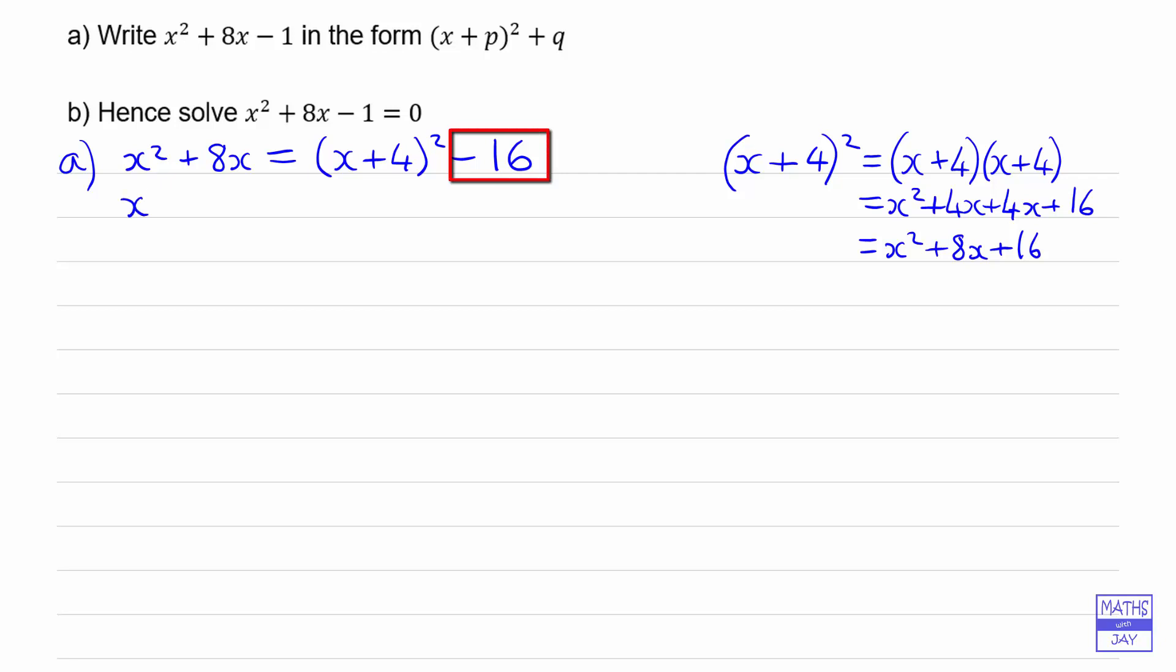And now what we really want is x squared plus 8x minus 1. So we simply subtract 1 from both sides. And then simplifying that we get minus 17. So we've written it in the required form showing that p is equal to 4 and q is equal to minus 17.